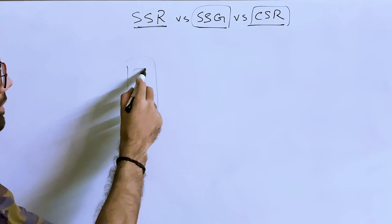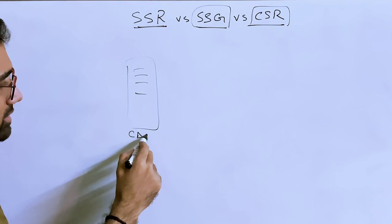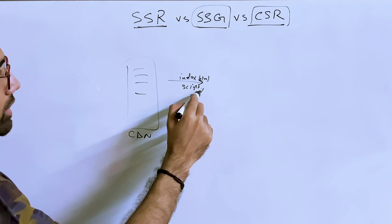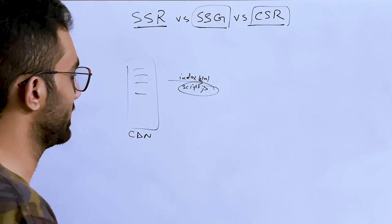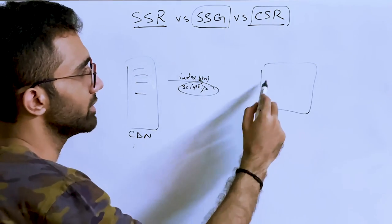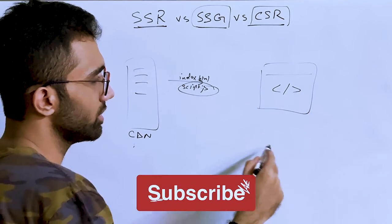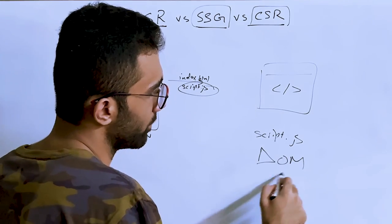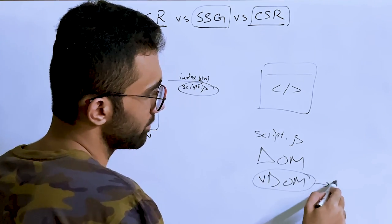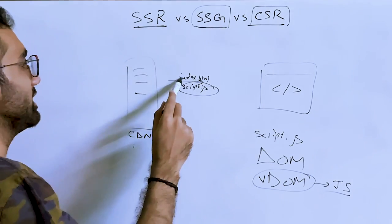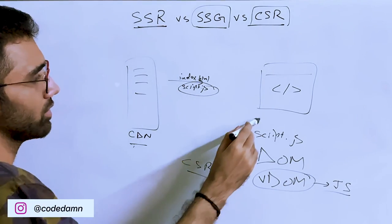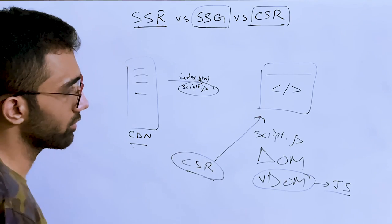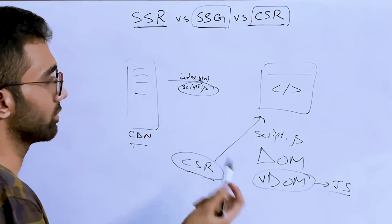Client-Side Rendering is something most front-end developers are already familiar with — you just have a server (ideally a CDN) that sends you static assets like index.html and script.js. In CSR, script.js constructs the DOM from zero. In React, you'd have a blank HTML page and script.js constructs the entire DOM from the React virtual DOM residing in JavaScript.